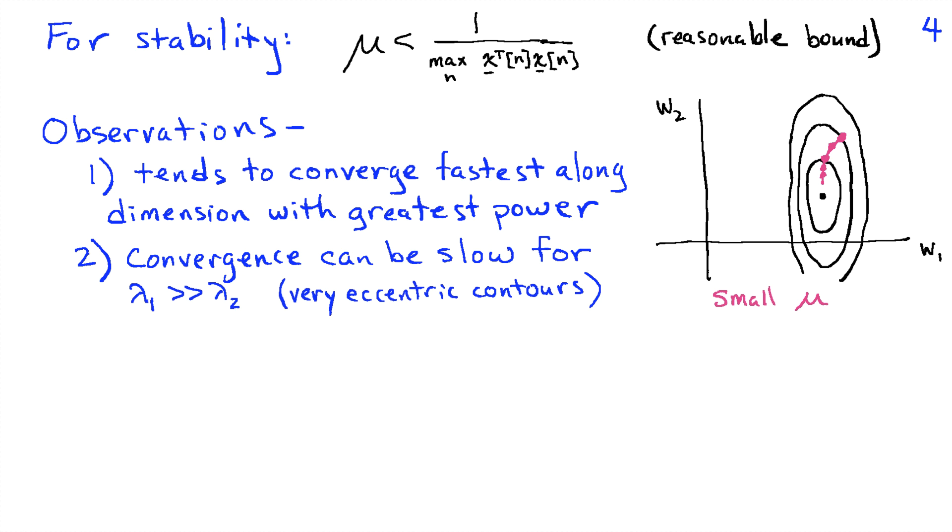We can make a few observations based on our gradient descent of the cost function J of W. Because the bowl is steepest in the w1 direction, which was associated with lambda 1, that's going to have the greatest power. The fact that it's steepest in that direction means it's going to converge the fastest along that axis. You can see an illustration of that here where we get to the near-optimum value of w1 sooner than we get to the near-optimum value of w2.